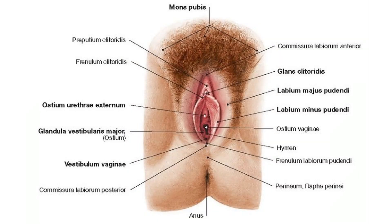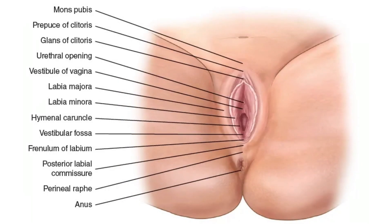These structures are referred to collectively as the vulva and include the mons pubis, the labia majora, and the labia minora. The mons pubis is a pad of fat located anteriorly over the pubic bone. After puberty, it becomes covered in pubic hair. The labia majora are folds of hair-covered skin that begin just posterior to the mons pubis.